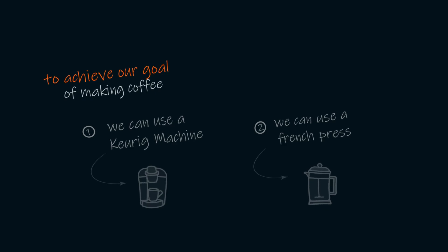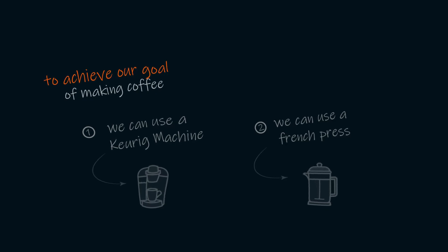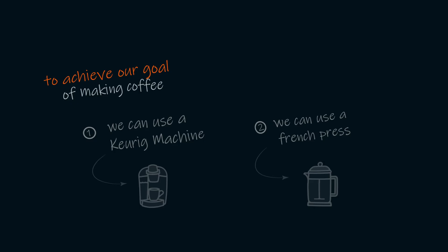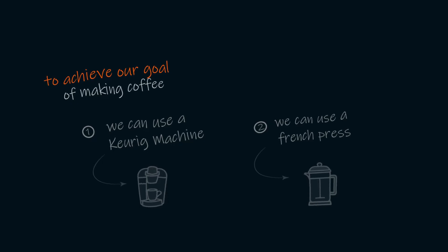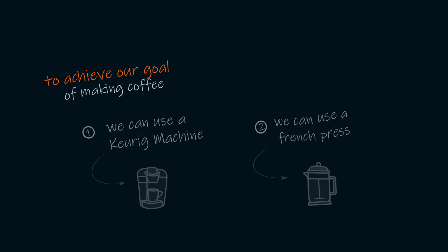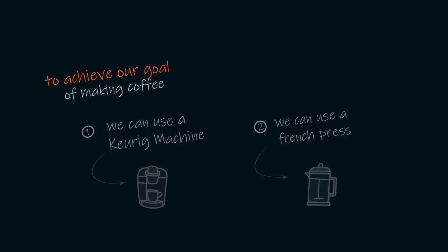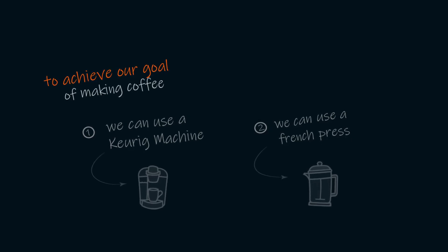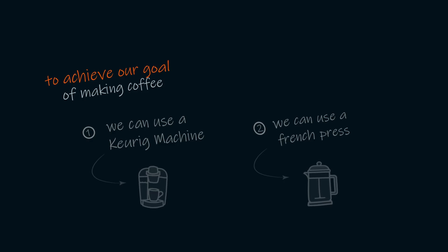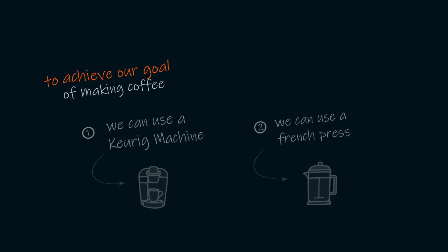If we think of two ways we can make this cup of coffee, we could choose one, using a Keurig machine, or two, using a French press. Now, let's take a look at these two ways to achieve our goal of making coffee, and we'll see the input actions we take versus the actual output actions made.